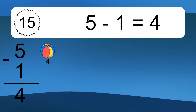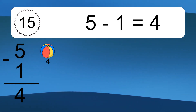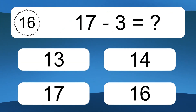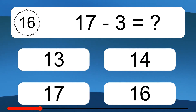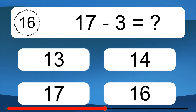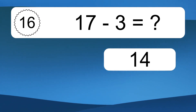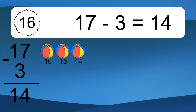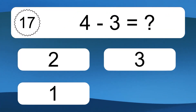5 minus 1 equals what? 5 minus 1 equals 4. 17 minus 3 equals what? 17 minus 3 equals 14. Let's count it. 16, 15, 14.